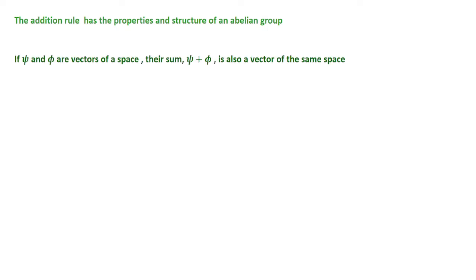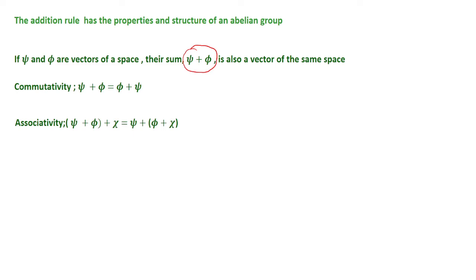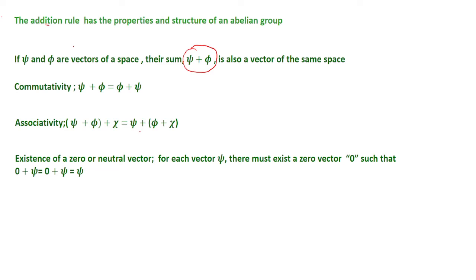The addition rules have the properties and structure of an abelian group. For example, if Psi and phi are two vectors of the space, there is a sum, which means Psi plus phi is also a vector in the same space. The linear vector space has the commutative property: Psi plus phi equals phi plus Psi. It also has the associative property: Psi plus (phi plus chi) equals (Psi plus phi) plus chi.